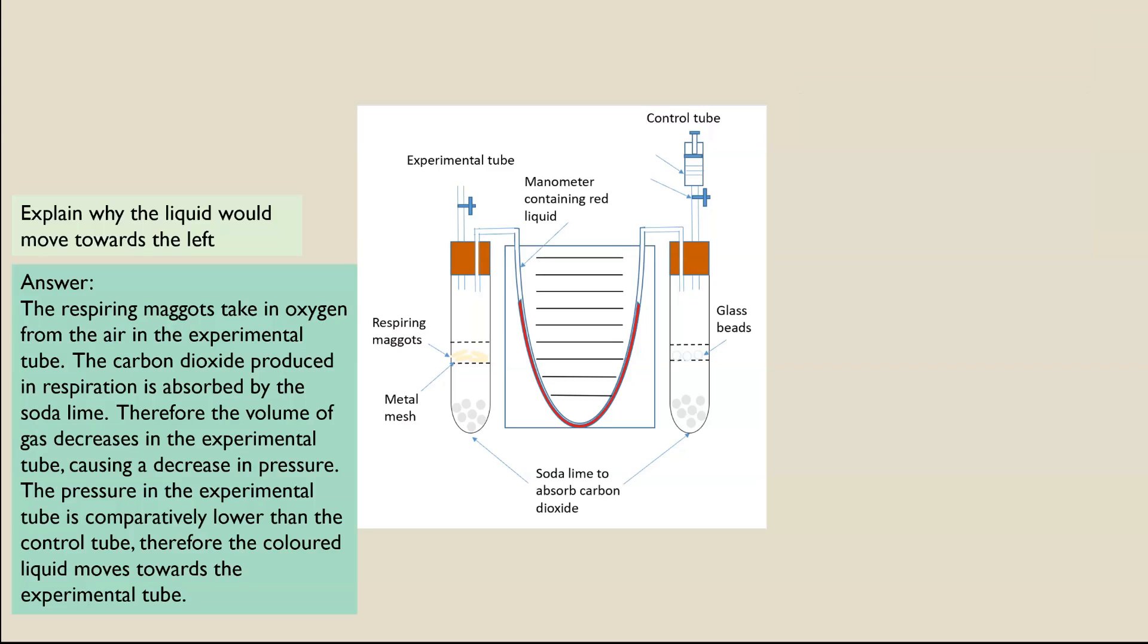The next one was explain why the liquid would move to the left. Now sometimes they'll add in an extra question and they'll actually get you to work out which direction would the liquid move first, and it's not always set up the experimental tube's on the left. Sometimes it's on the right, but the liquid will always move towards the experimental tube. And the reason for that is the maggots are respiring, so they're going to be having more oxygen diffused across their surface for more aerobic respiration.